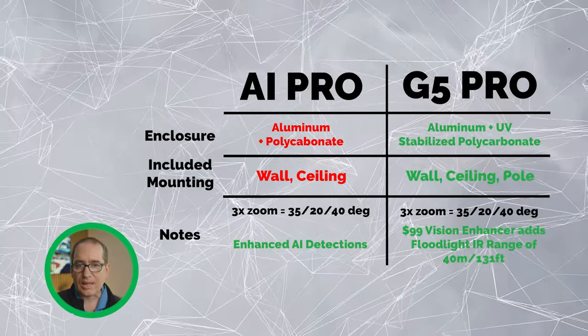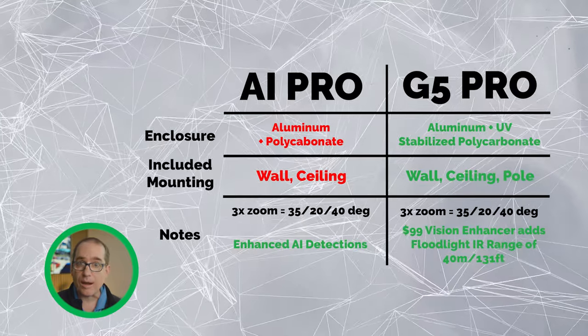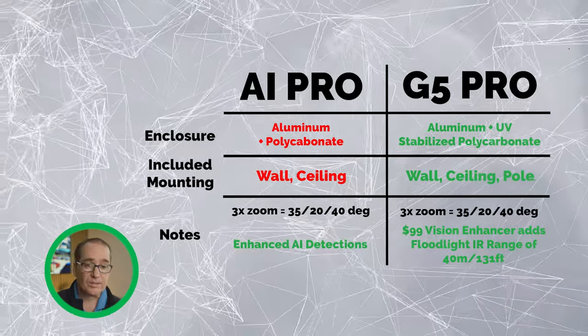The advanced AI detections and the floodlight and IR vision enhancer on the G5 Pro are the two real big differences between these cameras and will probably change the use case for which one somebody would buy. By the time you add the vision enhancer to the G5 Pro, you're talking about a $478 camera versus a $499 camera — only a $21 difference. It's not that big of a deal.